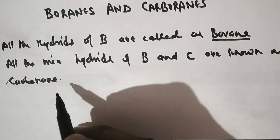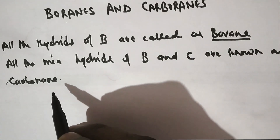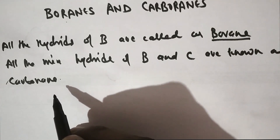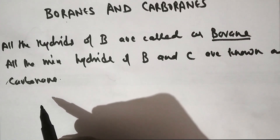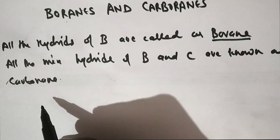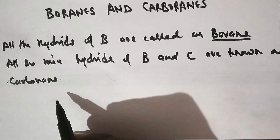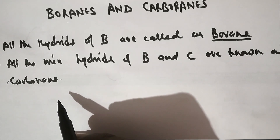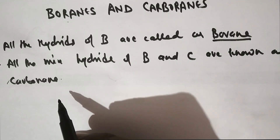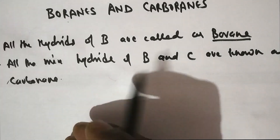There are many other boranes also reported in chemistry, just like hydride of gallium — gallane — and hydride of silicon — silane. These are the basic molecules which generally occur in nature or can also be synthesized by different chemical and physical methods.